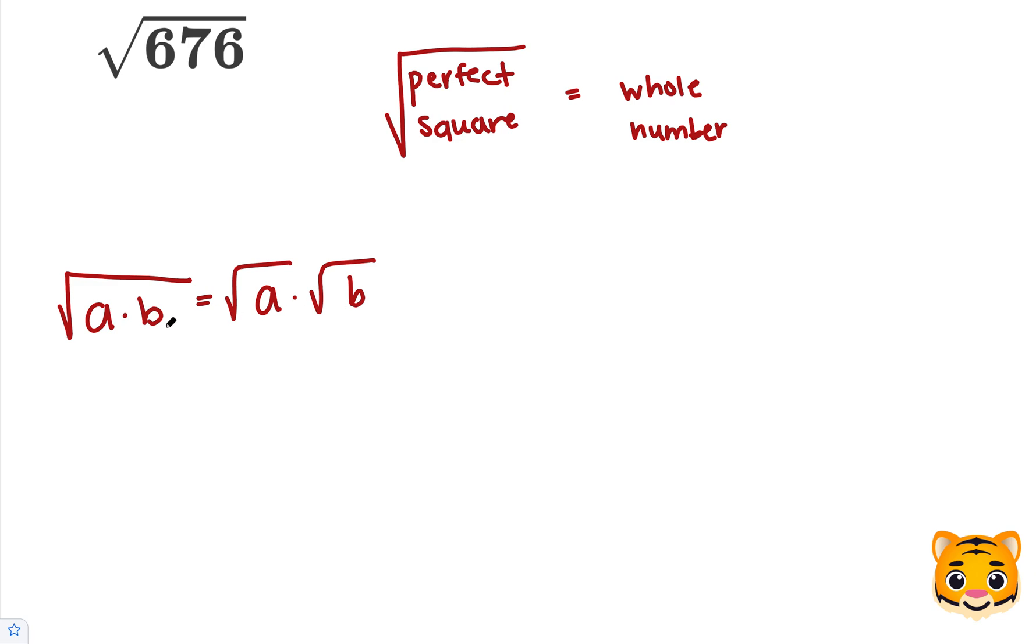This means that if you have two numbers multiplied by each other inside of a square root, you can separate them out into their own individual square roots multiplied by each other.